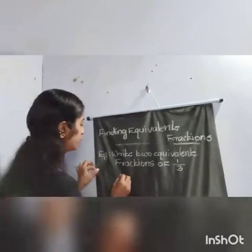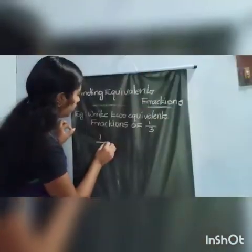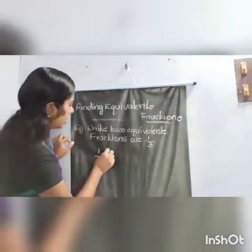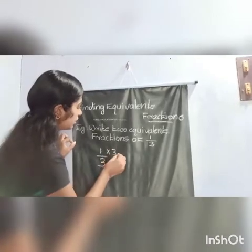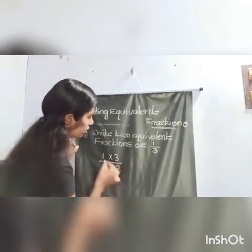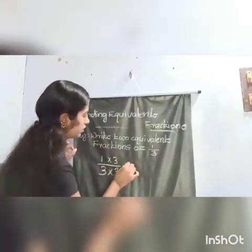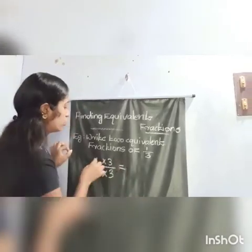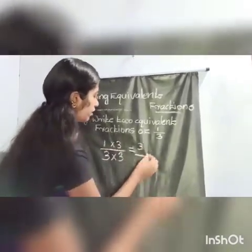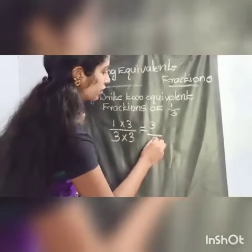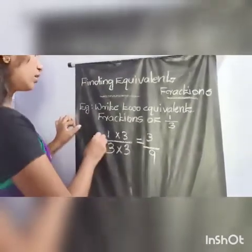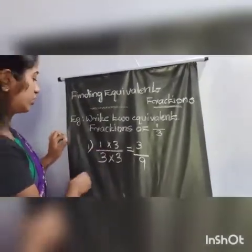So first, we find 1 by 3 multiplied by 3 over 3. This is equal to 1 into 3, which is 3, divided by 3 into 3, which is 9. So 3 by 9 is the first equivalent fraction.